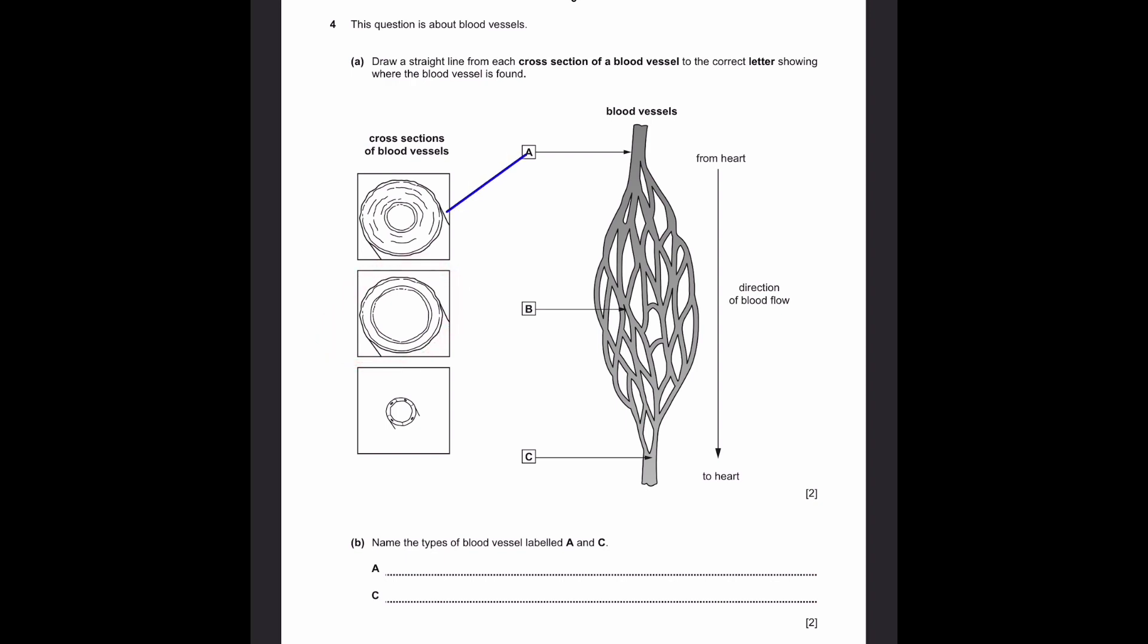Now the second one. It's quite big, the blood vessel, and there's less muscular walls around it. It's the opposite of the first one, which means obviously it's to the heart, which is the opposite of from the heart. C.